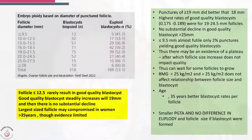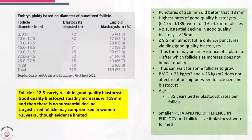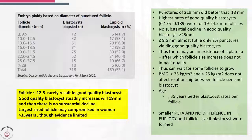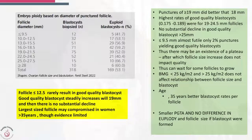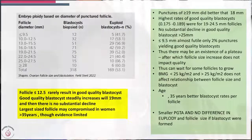BMI — whether less than or greater than 25 — did not have an impact on outcomes. In younger women, blastocyst quality was much better. When they examined euploidy, they found no difference in euploid blastocyst rates whether the blastocyst came from small follicles or larger follicles, which is quite reassuring, though it doesn't change the overall picture significantly.